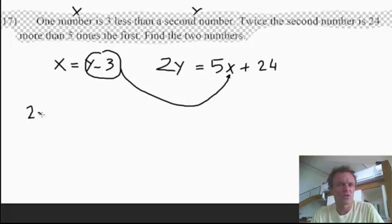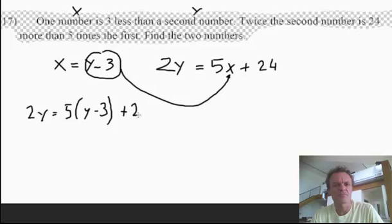If x is y minus three, I'm going to put that y minus three right there where the x is in the second equation. So let's move over to the left here. So 2y equals, it's 5x, but instead of x, I'm going to put y minus three, and still plus 24.